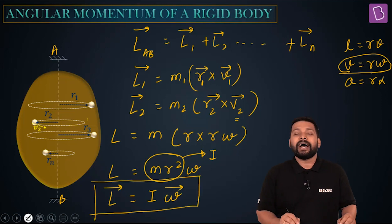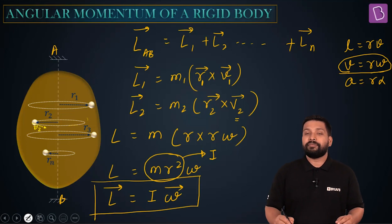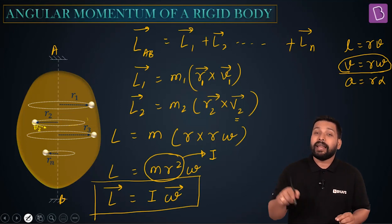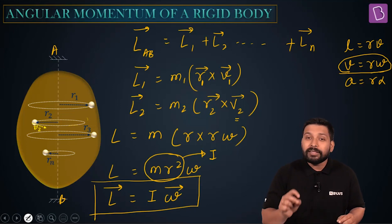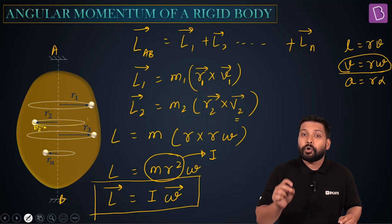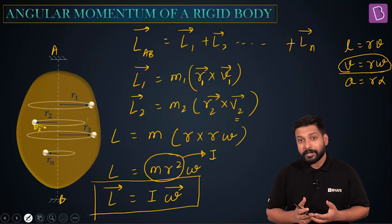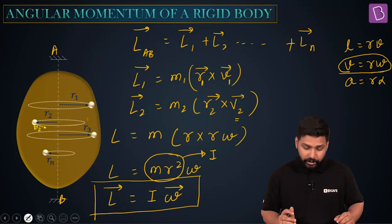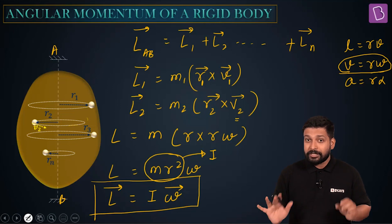In vector form, L vector equals I times omega vector. The direction of the angular momentum vector will be along the direction of the omega vector, that is along the angular velocity vector.